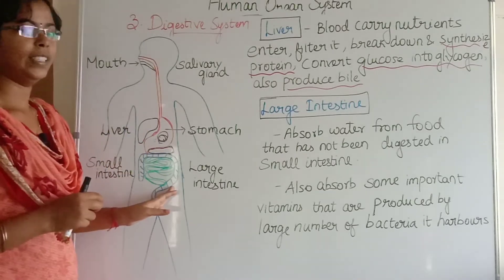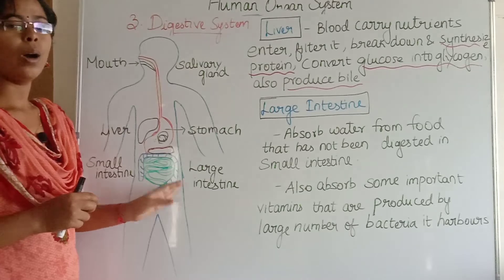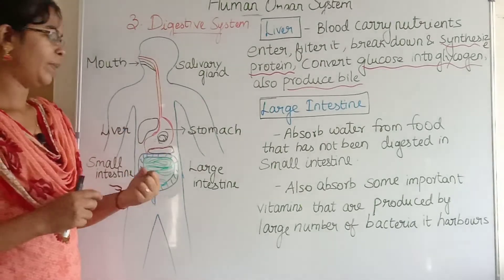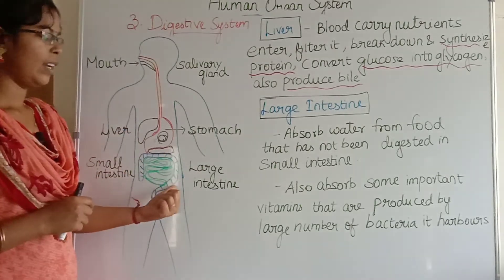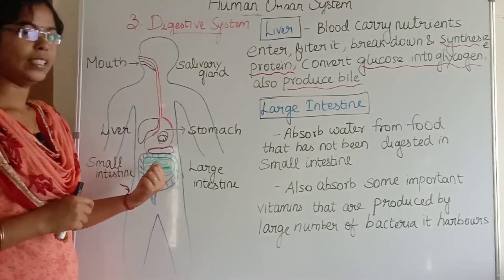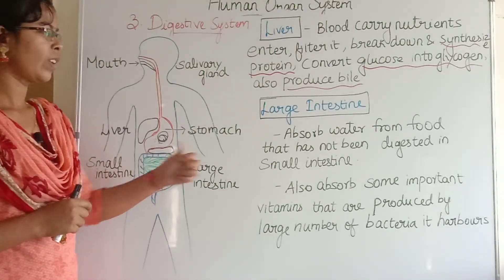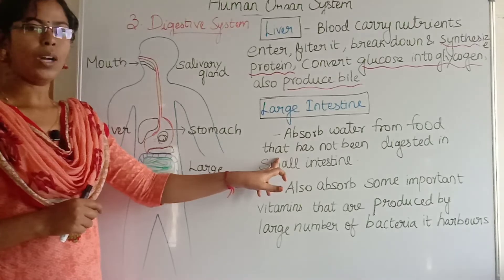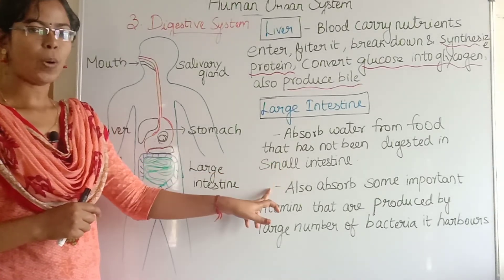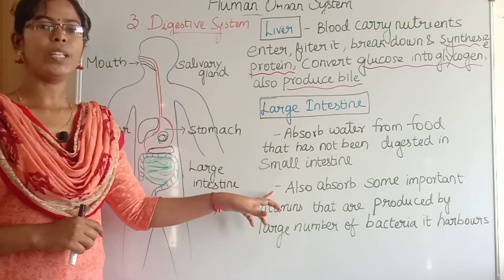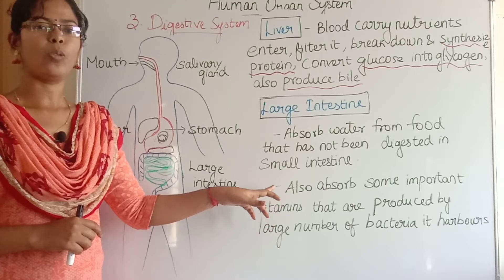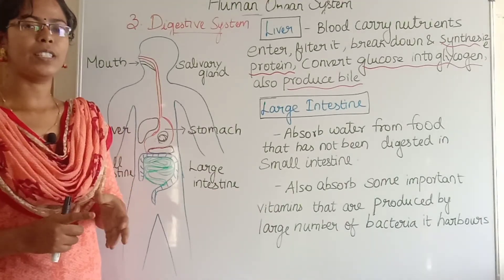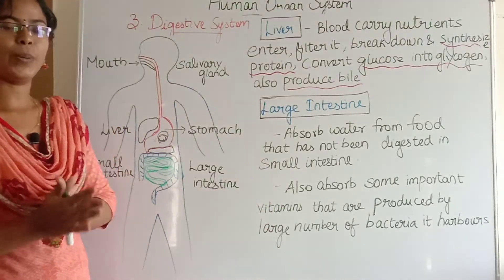In the large intestine, water from the undigested food is absorbed. The large intestine also absorbs some vitamins that are produced by the large number of bacteria it harbors.